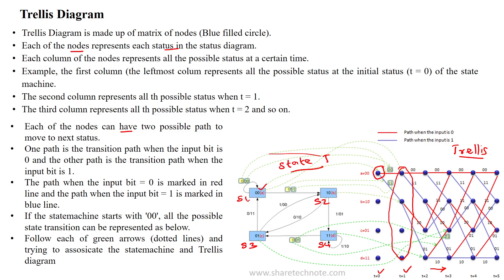State 00 has two paths: for input 1 it moves to state 10, and for input 0 it moves to itself. Each node has two different paths over different inputs. This is also indicated in the state transition diagram — one path over time period 1 and another over time period 0, indicated with a blue line and red line respectively.